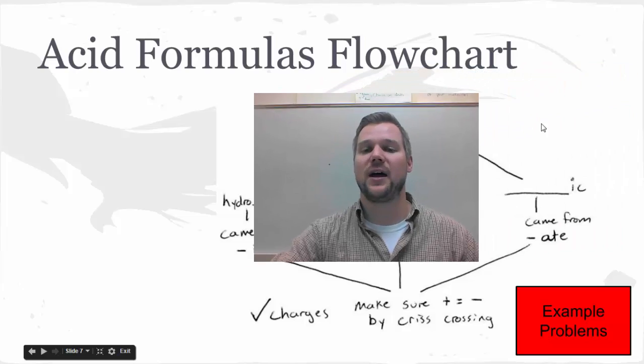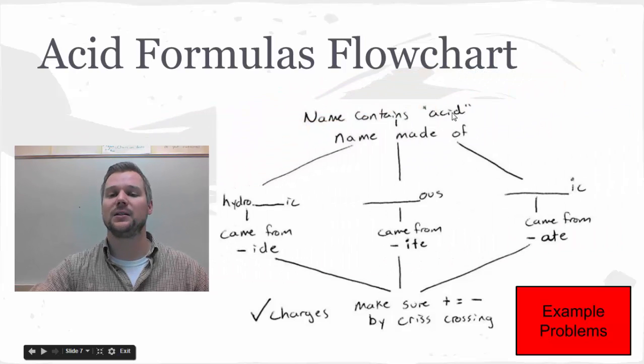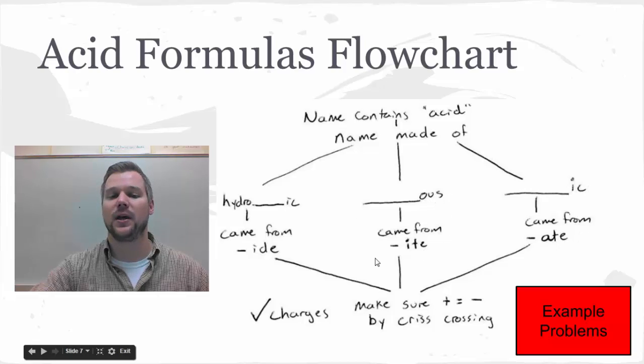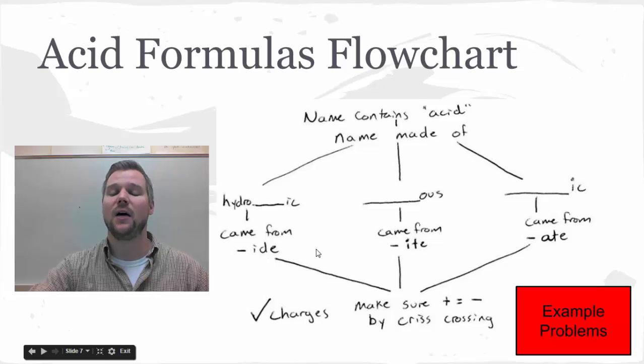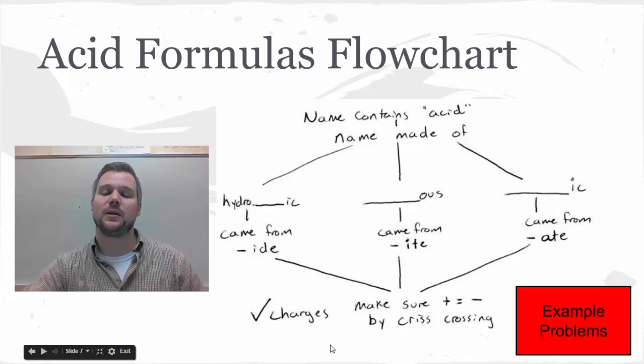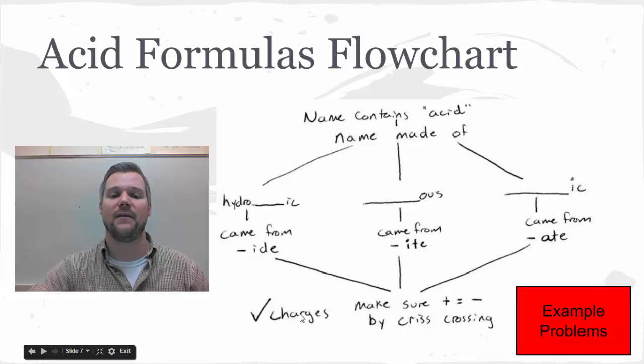Here's a flowchart of how this would look graphically. We know we have an acid because it contains the word acid. Then you're going to take what you have and cross off the hydro and the ic, or cross off the ous and replace it with ite, or cross off the ic and replace it with ate. Replace the endings of whatever those anions happen to be. Find that symbol that represents that name. Don't forget to crisscross because acids need to also have an overall charge of zero.